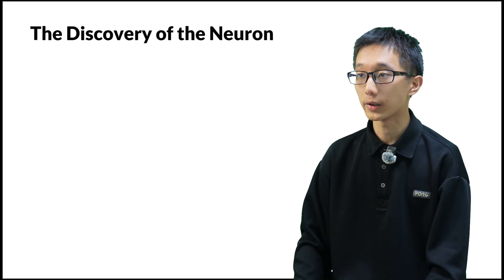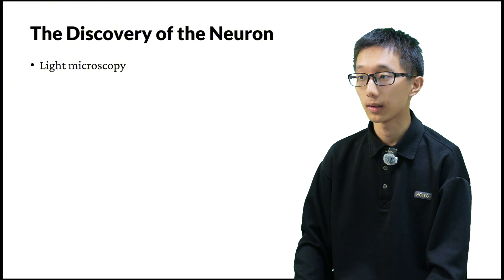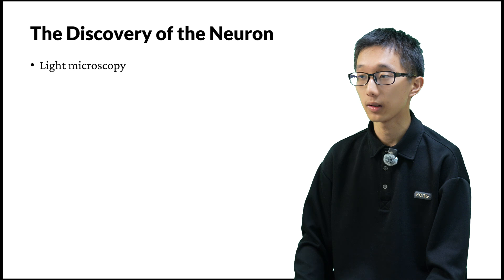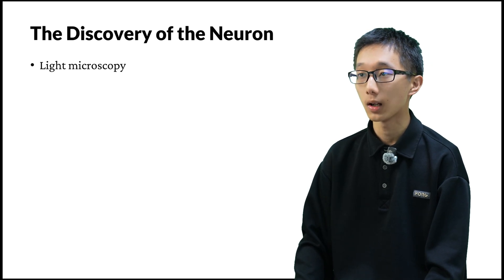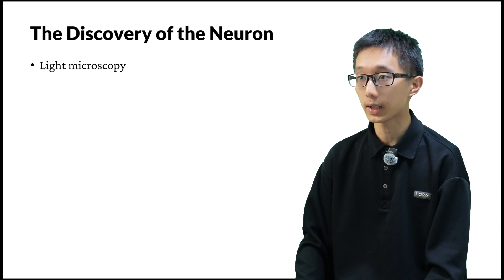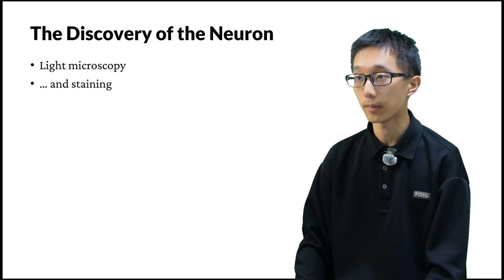How was the neuron discovered? To discover the neuron, we need to observe it, and that requires light microscopy. The first cell was discovered by light microscopy, and the first neuron must be discovered by light microscopy as well. However, neurons, like many other animal tissues, are hard to observe directly with light microscopy because their color is too identical, and we cannot discern individual cells, so we need to stain them in order to see them.